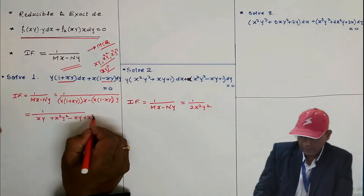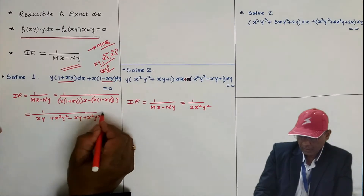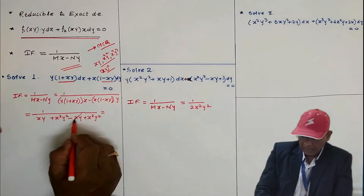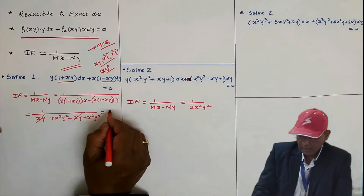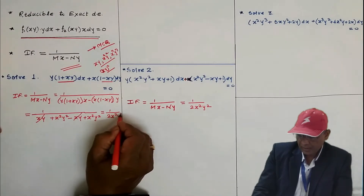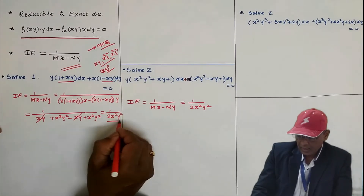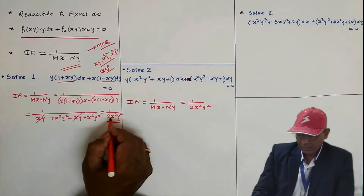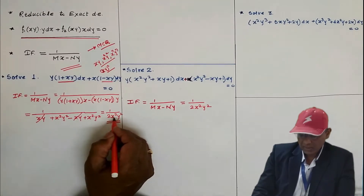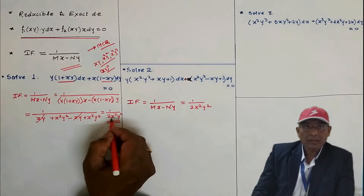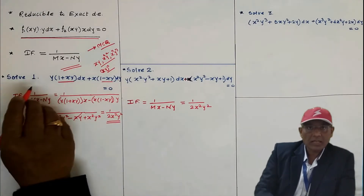After computing mx − ny, the term −xy and +xy cancel each other, leaving 2x²y². Therefore the integrating factor is 1/(2x²y²).